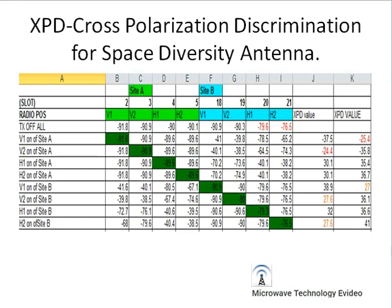To calculate the XPD value for an XPIC link, a diagram is given for the space diversity antenna. The first step is to take all antennas offline, measure the RSL, then turn on the TX for the V1 radio and check the RSL of V1, V2, H1, and H2. Here V1 and V2 refer to site A vertical polarization antennas, and H1 and H2 refer to horizontal polarization radios. The same procedure applies at the far end.